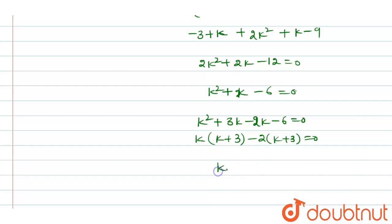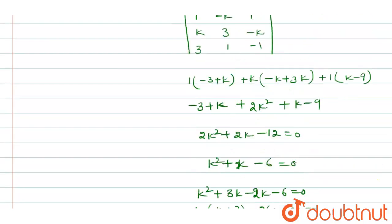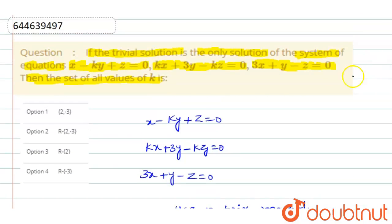So k equals minus 3 and k equals 2. The value of k is minus 3 comma 2. This is the final answer. Checking the options, option 2 is the right option: 2 comma minus 3. Thank you.